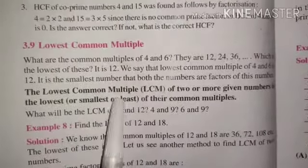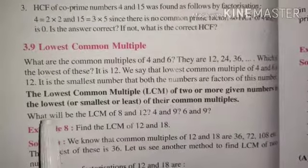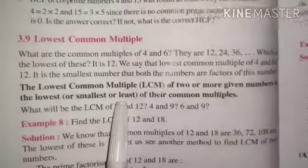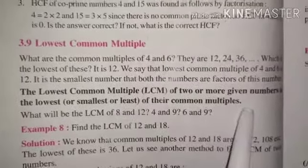The lowest common multiple of 2 and more given numbers is the lowest, the smallest is the least of their common multiples.